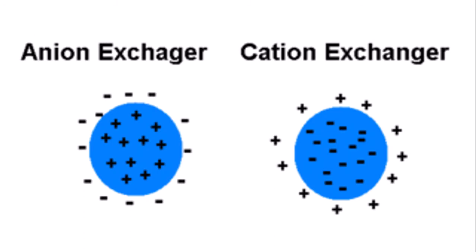If we talk about an anion exchanger, it should have the ability to exchange anions. If we talk about a cation exchanger, it should have the ability to exchange cations. When we say anion exchanger or cation exchanger, we are talking about the ions they are exchanging.